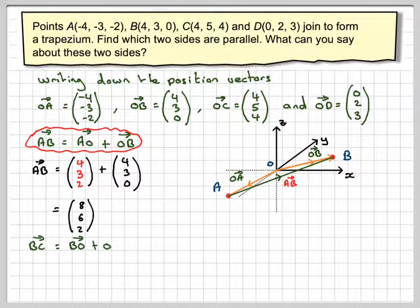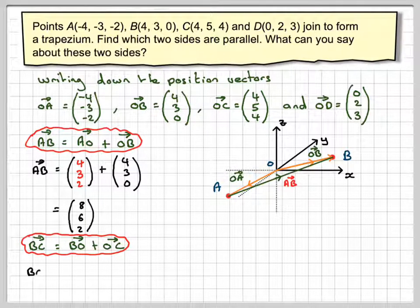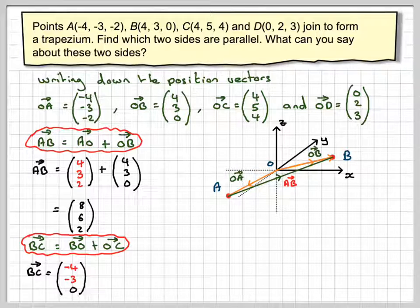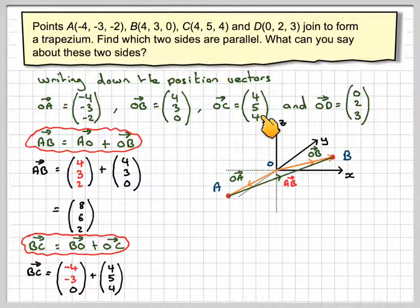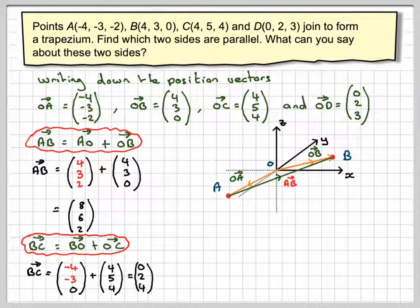Now, we'll repeat that process. BC will be BO plus OC. So all the signs will change on these. We get (-4, -3, 0) adding C to it, which is (4, 5, 4). Minus 4 plus 4 gives me 0. Minus 3 plus 5 gives me 2. 0 plus 4 gives me 4. We get the vector (0, 2, 4).